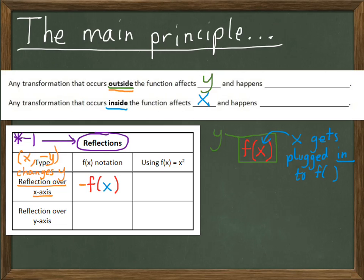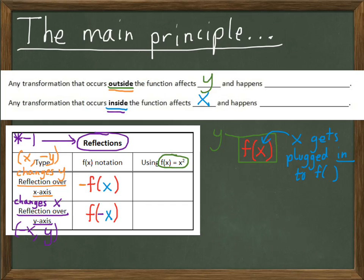What about a reflection over the y-axis? A reflection over the y-axis changes x. The mapping associated with that is (negative x, y). Since that happens to x, it needs to occur inside the function. So I'm going to put the negative sign on the x, because we're applying the negative 1 to the x. To help this make more sense, we're going to use a real function — specifically f of x equals x squared. So if f of x is x squared, I can replace it with x squared, because that's what it means.